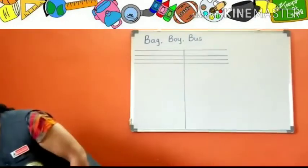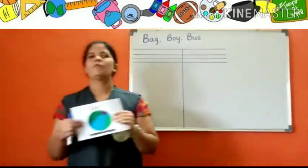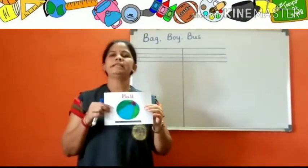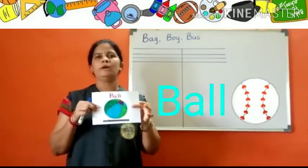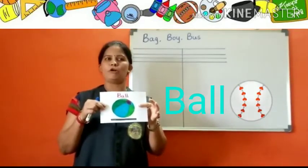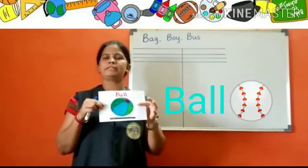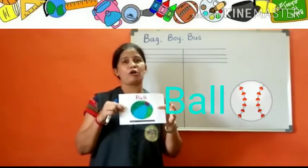What can you see here children? Ball. B-A-L-L, ball. Ball means Chandoop. It is a toy.